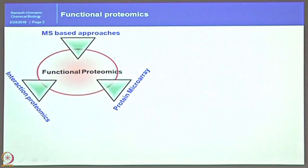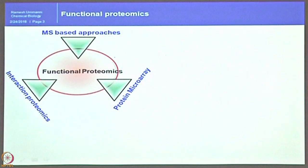That is one reason you should perform functional proteomics rather than just differential proteomics. Proteomics is broadly divided into differential proteomics, structural proteomics, and functional proteomics. Differential proteomics tells about upregulation and downregulation, but we also need to know whether that upregulation is really influencing the disease. That is where functional proteomics gained importance. There are many approaches for functional proteomics — particularly MS-based approaches, interaction proteomics, and protein microarrays — which is moving toward the theme of our course.